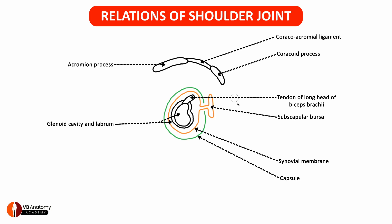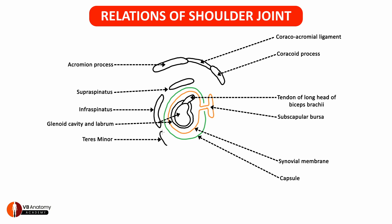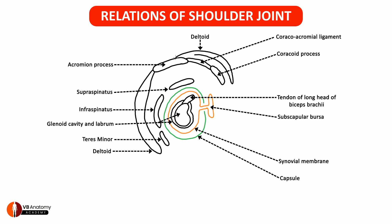Immediately above the shoulder joint is the supraspinatus muscle. A little posteriorly, here is the infraspinatus muscle and the teres minor muscle. Covering these posteriorly and superiorly is the deltoid muscle.